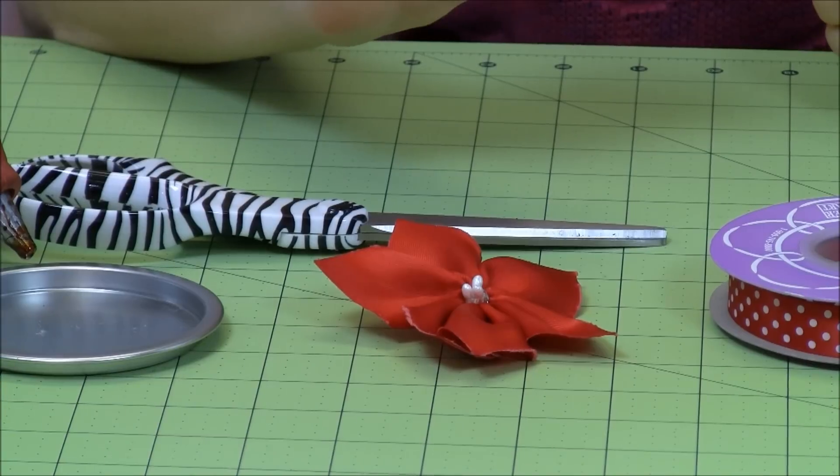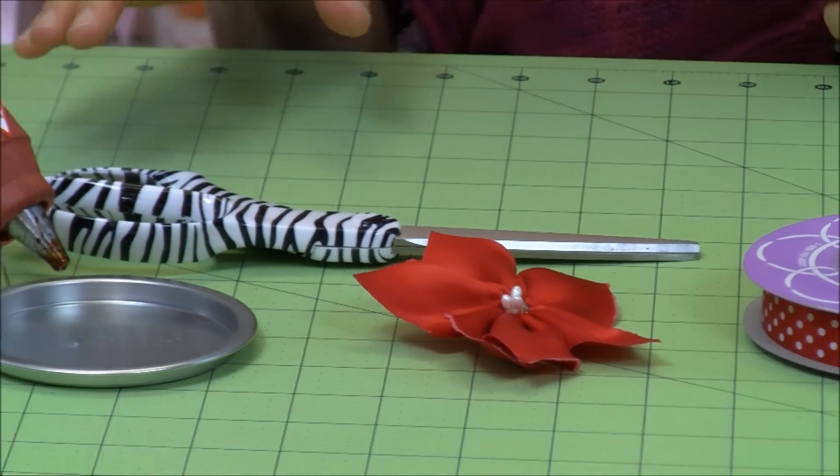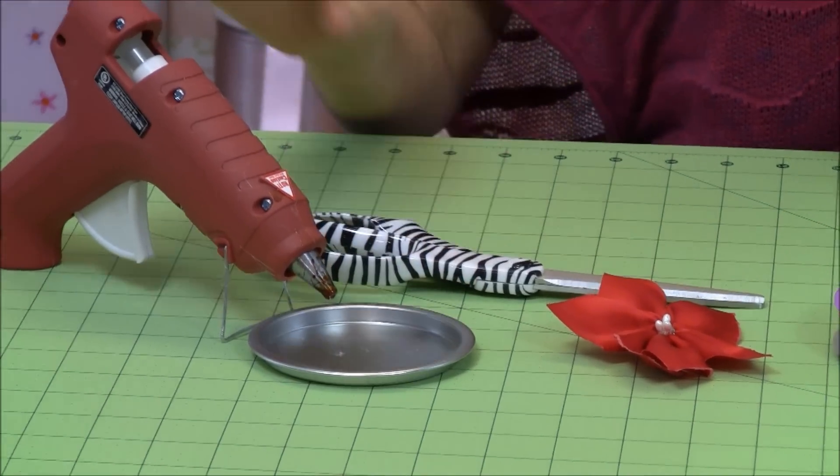Actually, we show you that in another video, so you can check that out if you're interested in making this one. And for our tools, we're going to need a pair of scissors and then a glue gun.